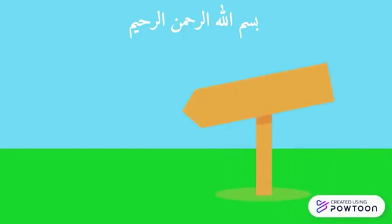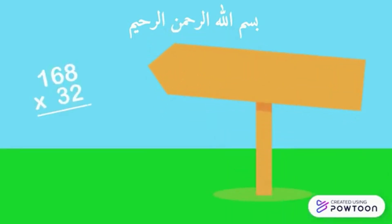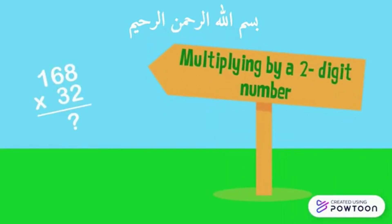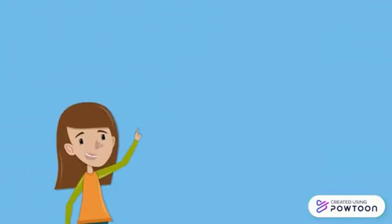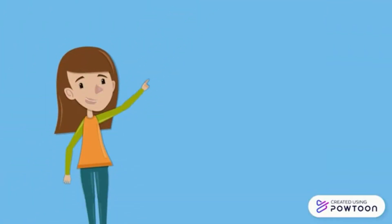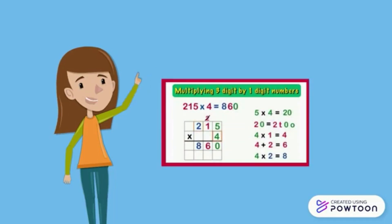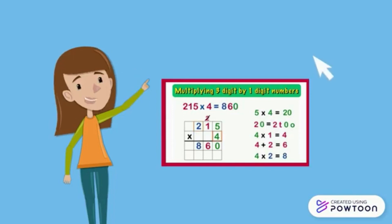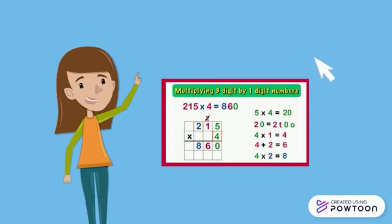Today we are going to learn how to multiply a multi-digit number by a two-digit number by setting the multiplication problem in columns. First of all, to understand this video you need to know how to multiply by a one-digit number. If you don't know how to multiply yet, I invite you to watch this video by clicking here.